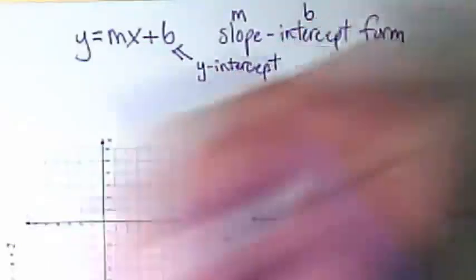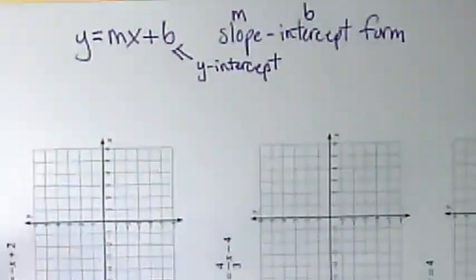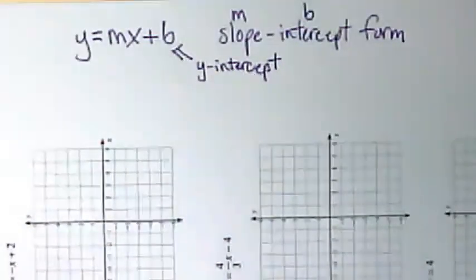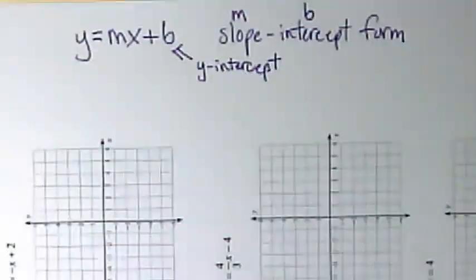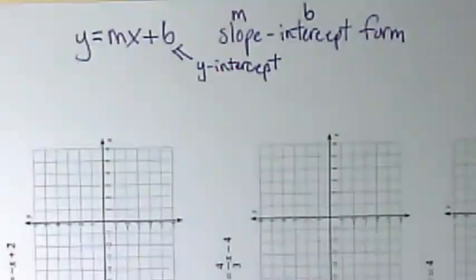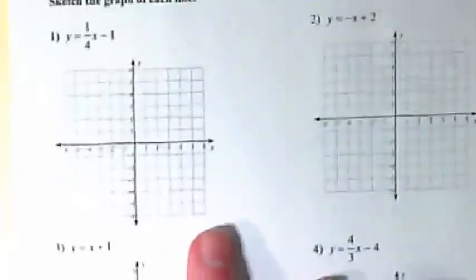And it is actually the place where when we're working with this equation and we have the equation and we're trying to make a graph, we start with the B. We start at the end of the equation. So let's turn our papers back up and we're going to try to graph two of these together.